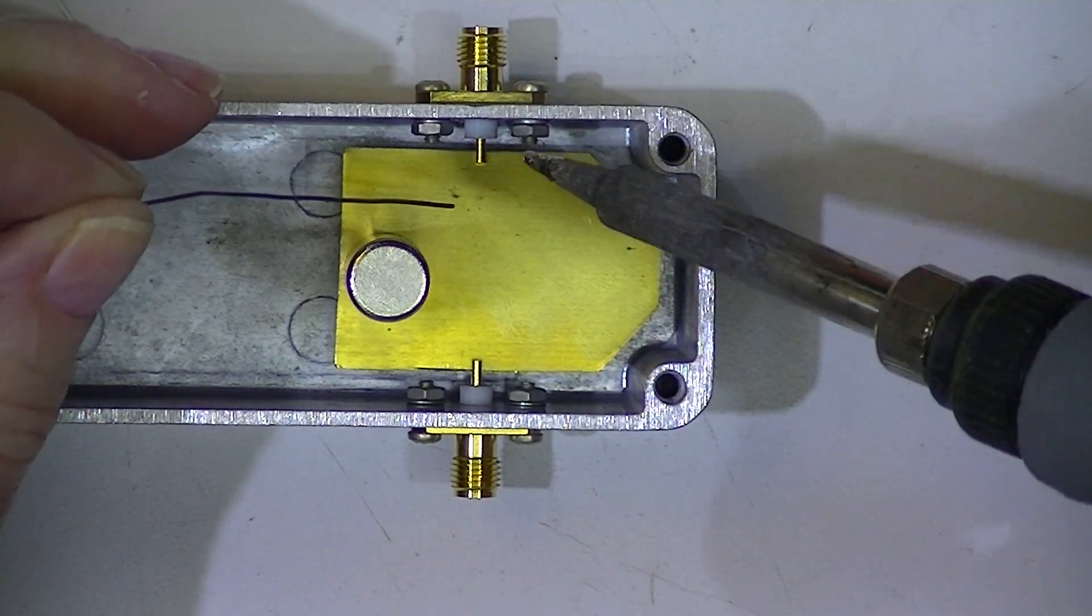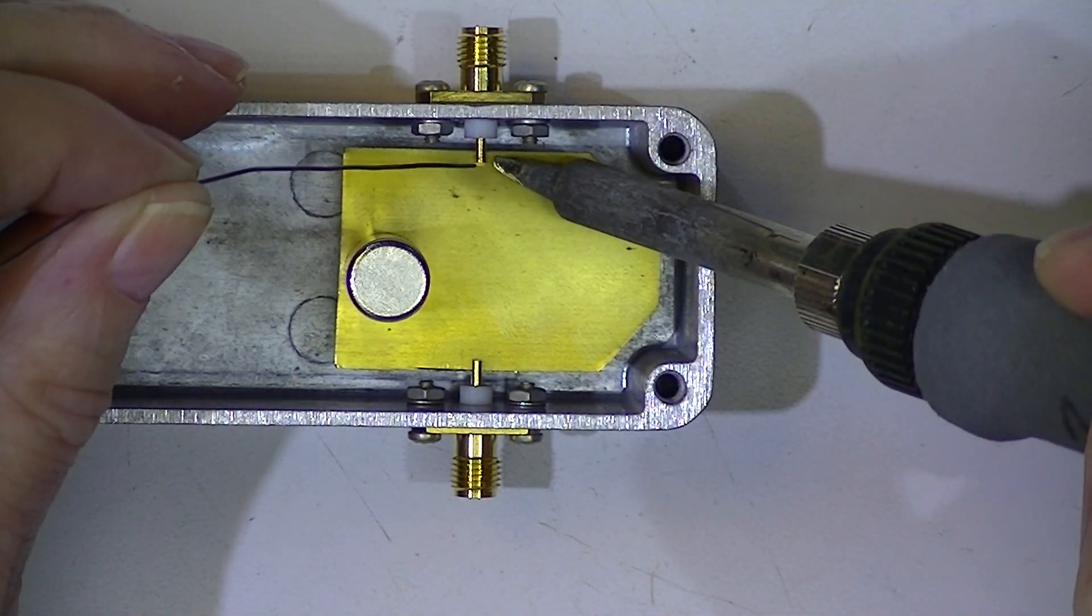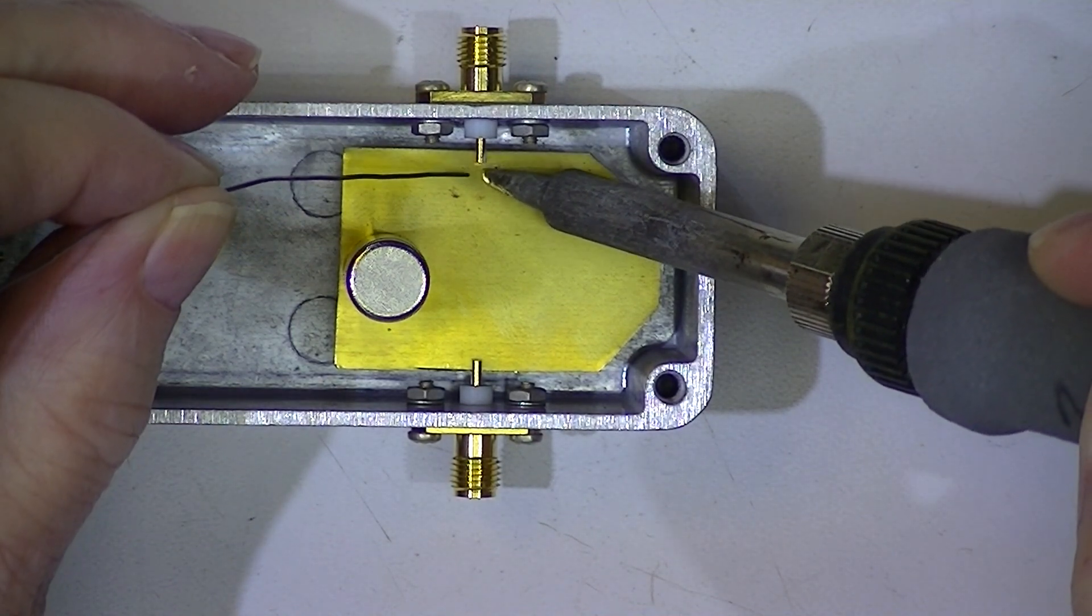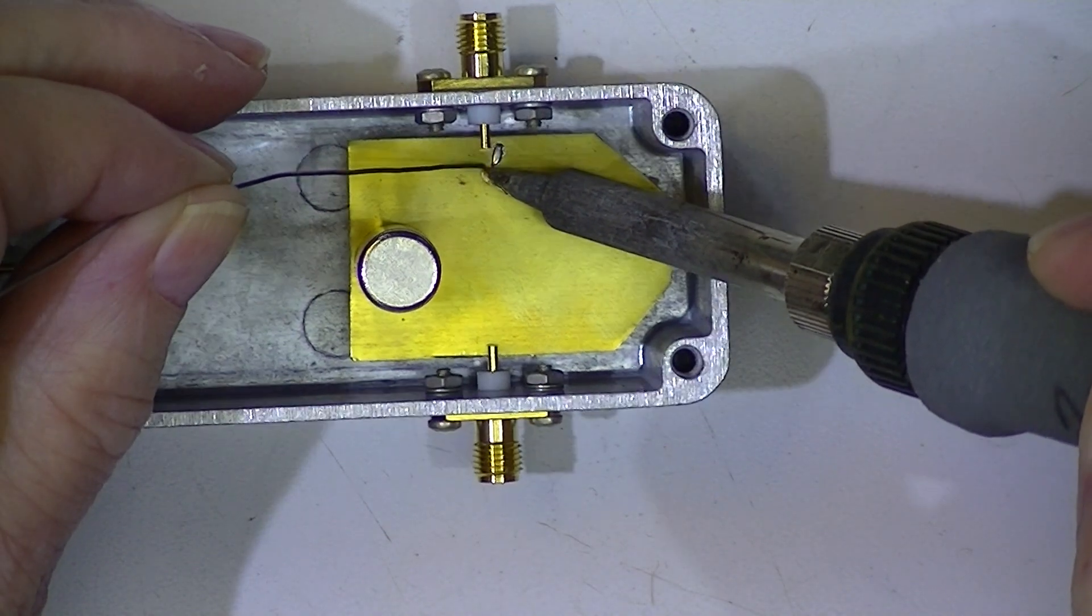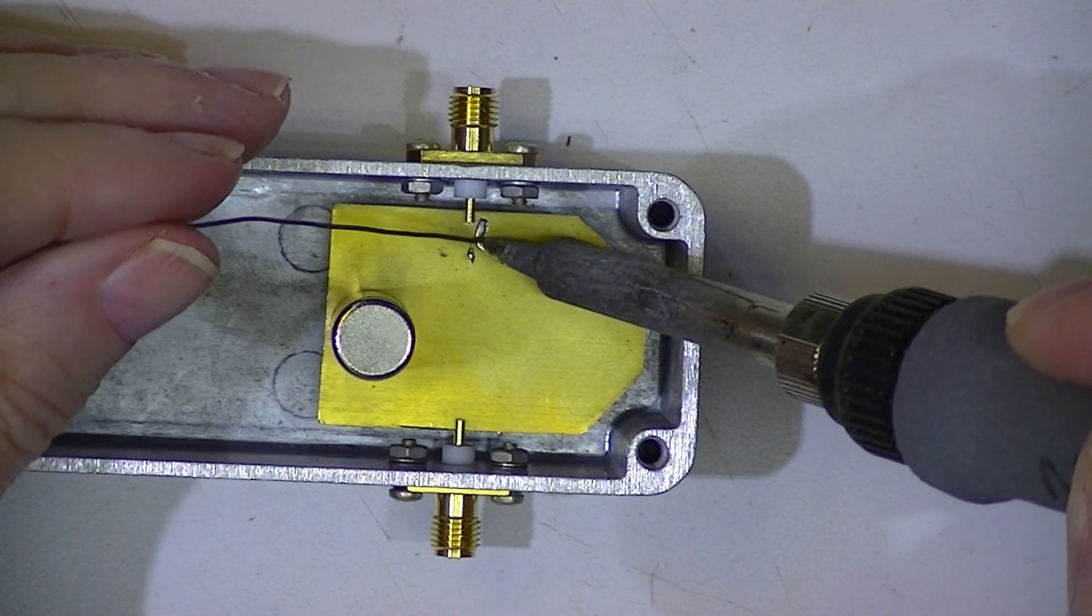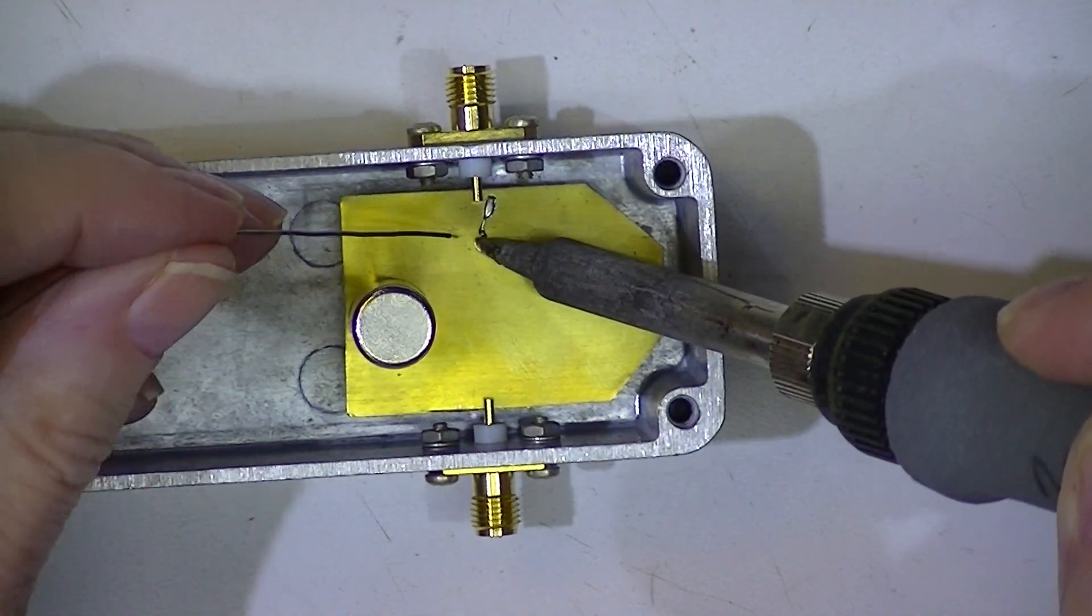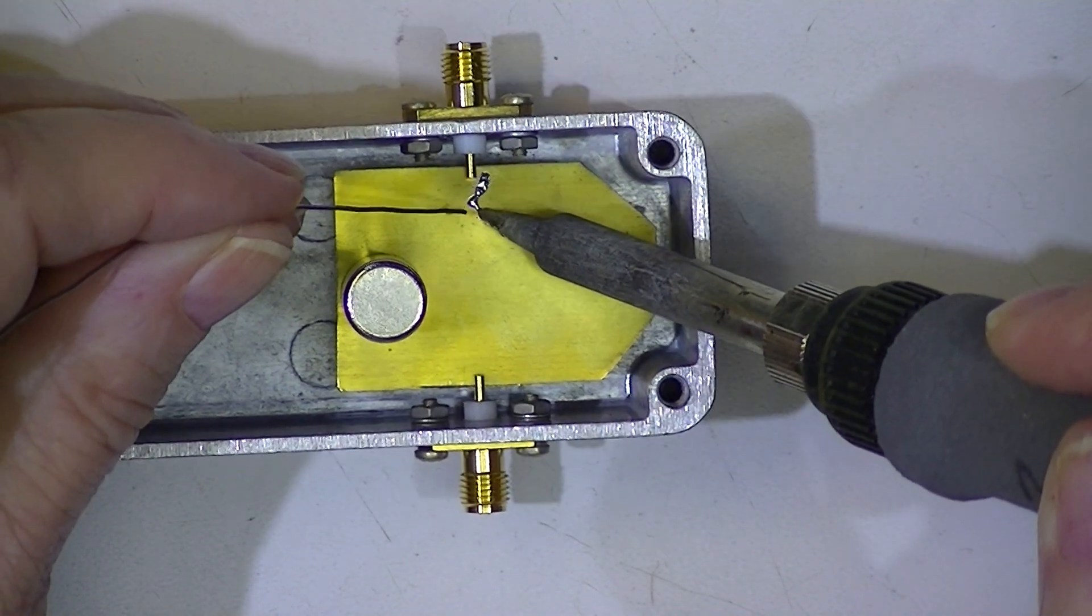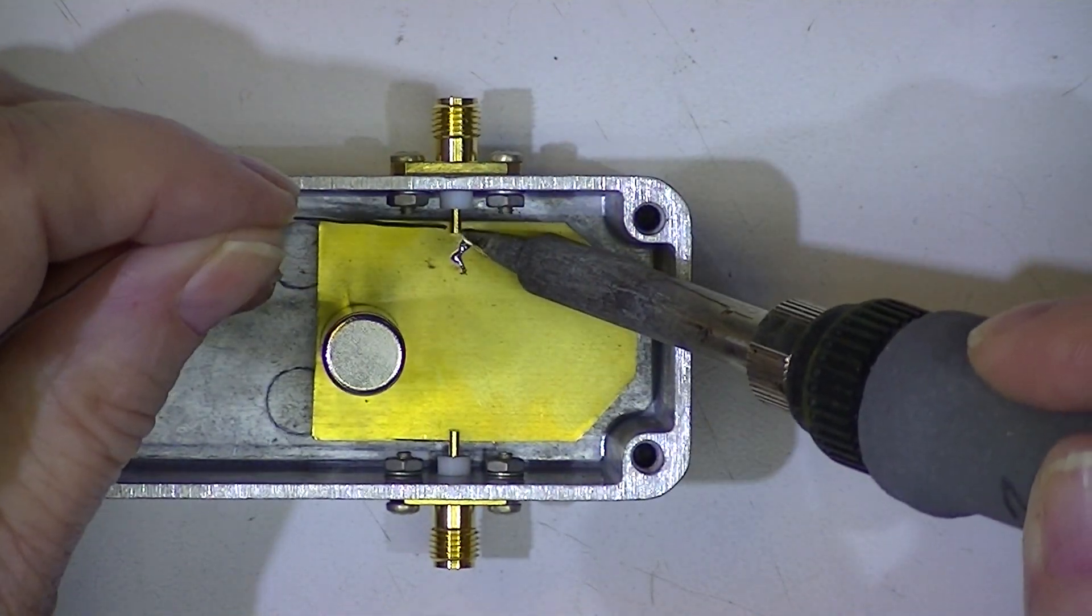So I'll try to solder this in place. I'm going to get on the brass first and try to tint it. The magnet is attracting my soldering iron, that's interesting.